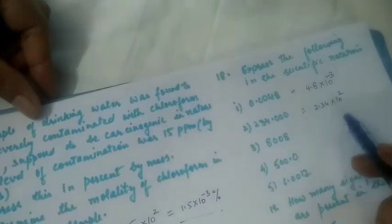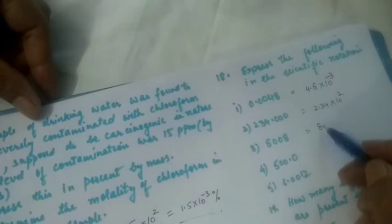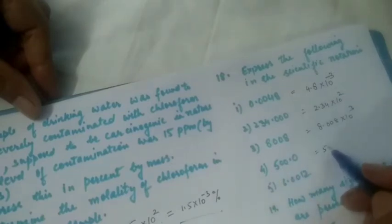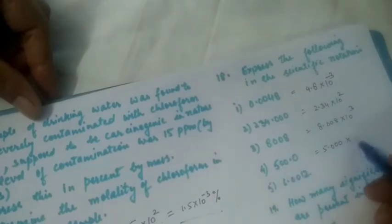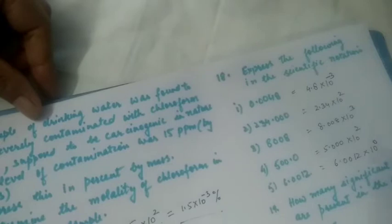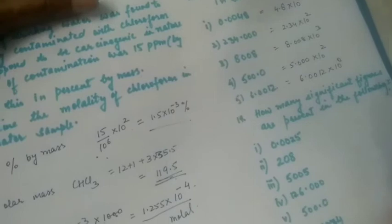Continuing scientific notation: 8008 becomes 8.008×10³. And 6.0012 already has one digit before the decimal, so it is 6.0012×10⁰, since 10 raised to power 0 is 1.